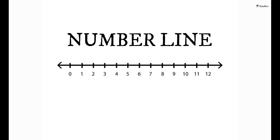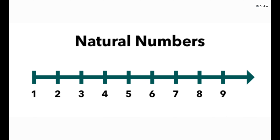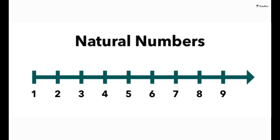Now, let's see what all numbers can be defined on the number line. Starting with the number 1, if we start counting by adding 1 to the previous number, we will get the number set of the natural numbers. Since we can keep adding 1 forever, there are infinite natural numbers and we represent these by capital letter N.